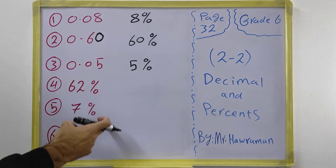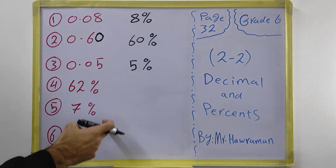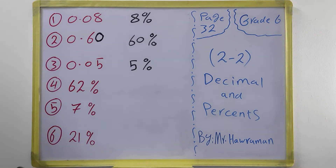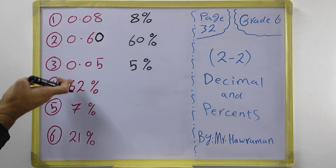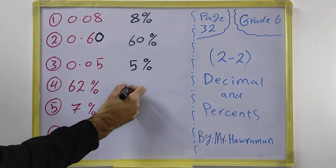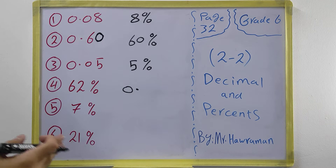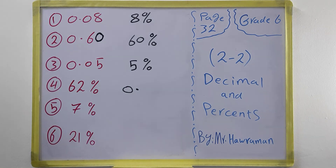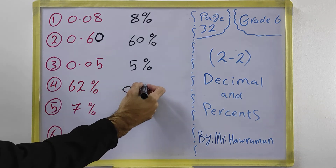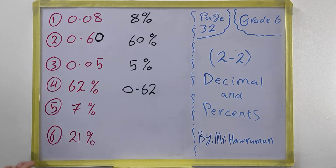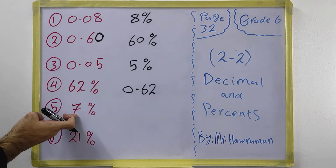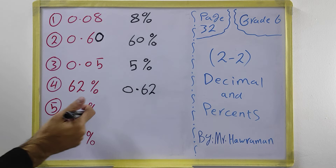Now if we have a percent and we want to change it to a decimal, we do the reverse. We always write zero point, and after the point we must have two digits. For example, 62 percent: we write the same digits, so it becomes 0.62.